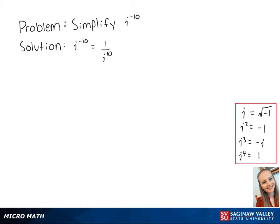Using our properties of i, we can rewrite this again as 1 over i to the 4th power squared times i squared.